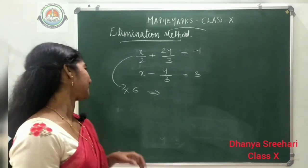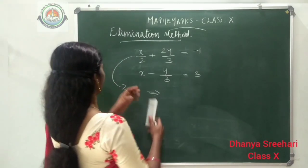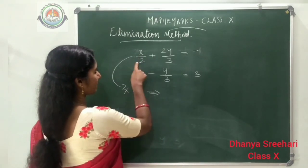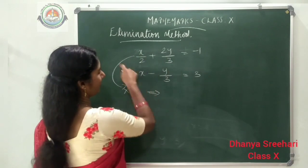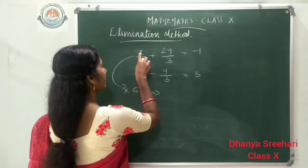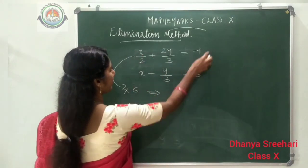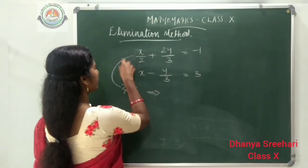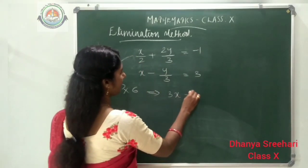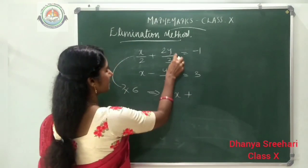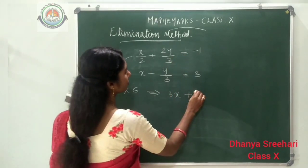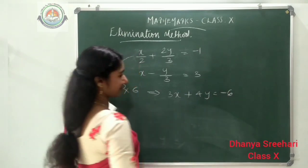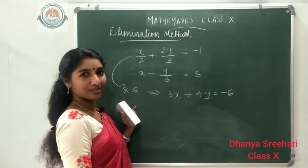Multiplying all three terms of the first equation by 6: x over 2 times 6 gives 3x, plus 2y over 3 times 6 gives 4y, equals minus 6. We got one equation without denominators: 3x plus 4y equals minus 6. And for the second equation, we multiply by 3 to remove the denominator 3, which gives us 3x minus y equals 9.